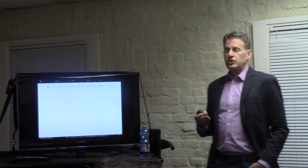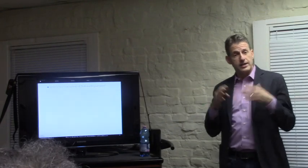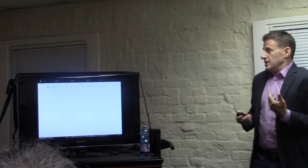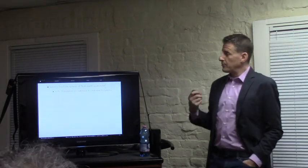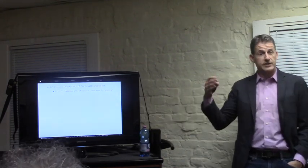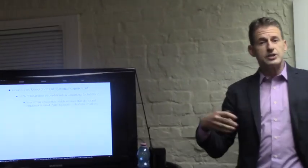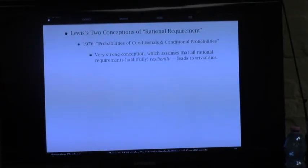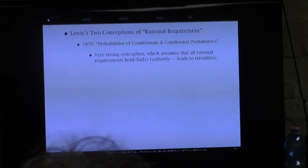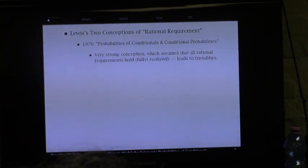I decided I was going to take a couple weeks off from emails and everything else and just read some David Lewis papers from the 70s. In the process of doing that, I discovered an inconsistency in Lewis's notion of rationality, which led to this project. This is really a tale of two David Lewis papers and two different conceptions he had of what it takes for some constraint on an initial degree of belief function to be a rational requirement. The first paper, published in 1976, is called Probabilities of Conditionals and Conditional Probabilities—a very famous paper that led to a lot of research in both philosophy and linguistics.